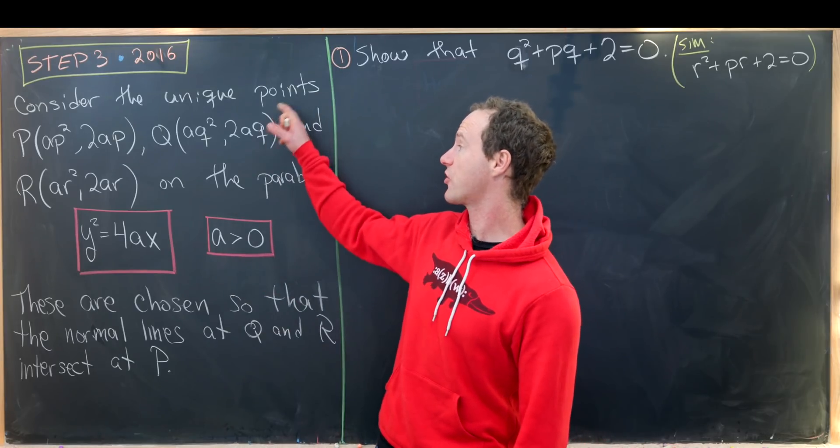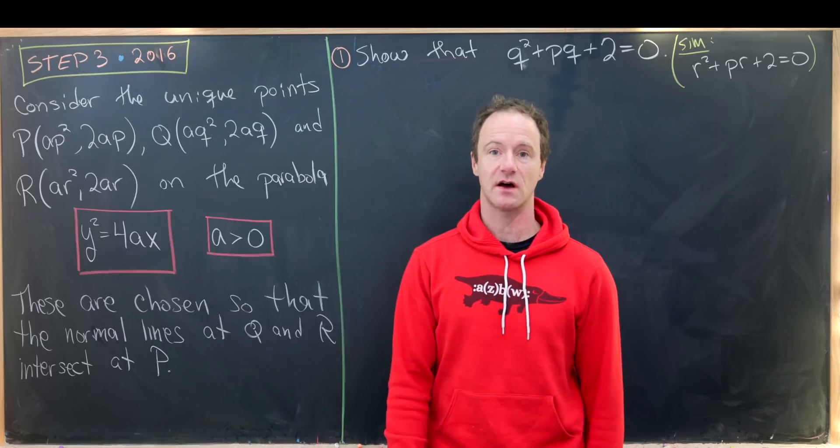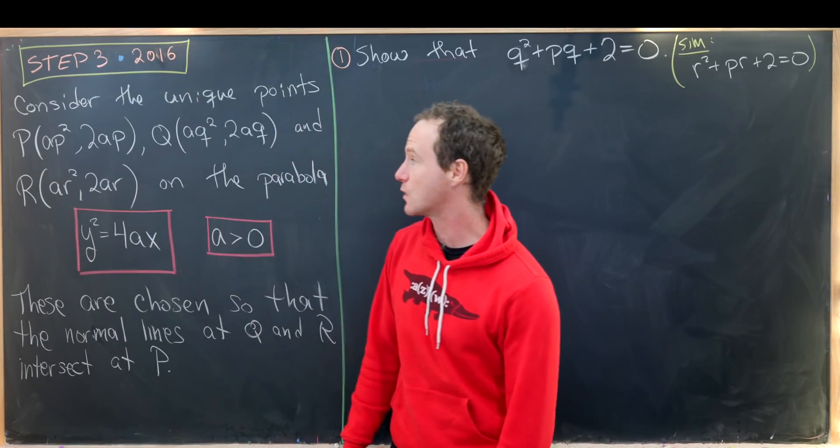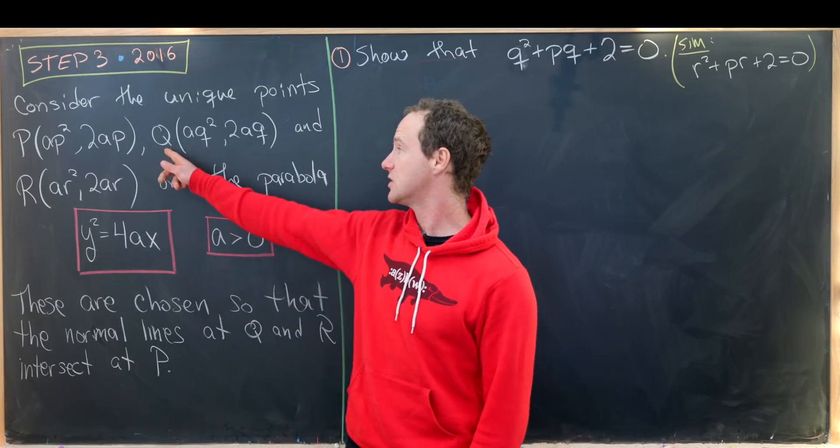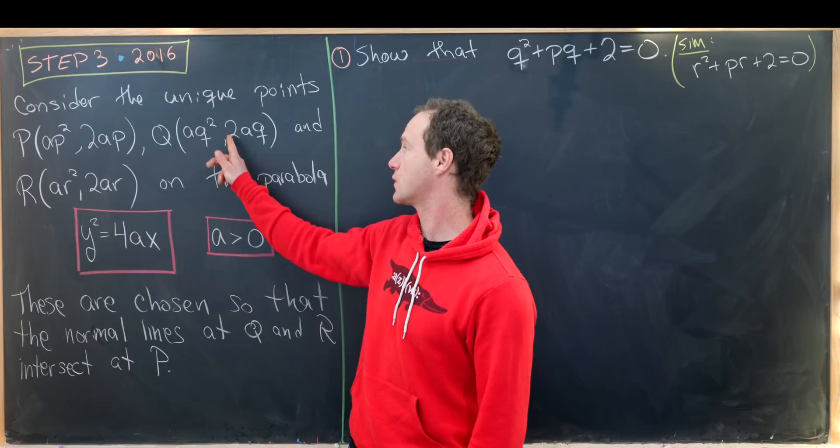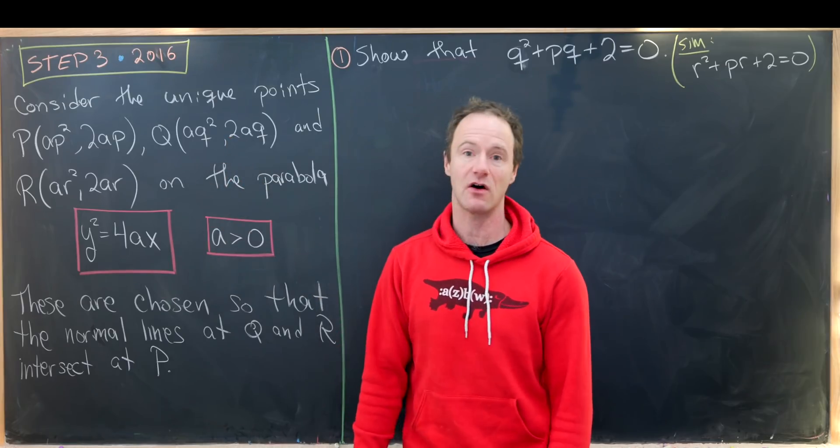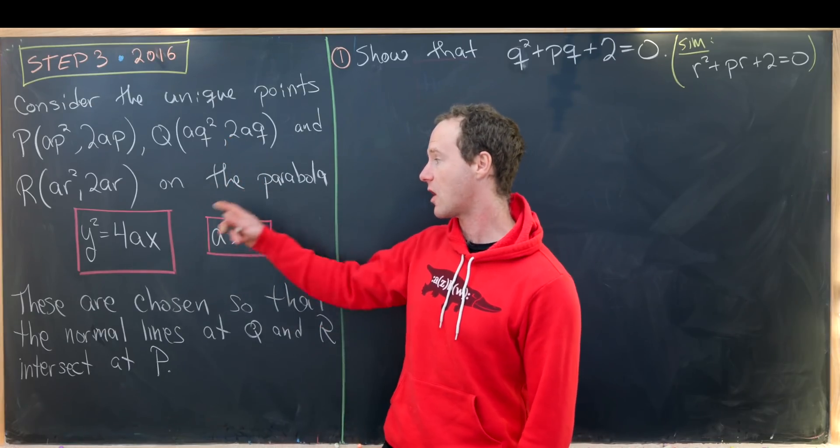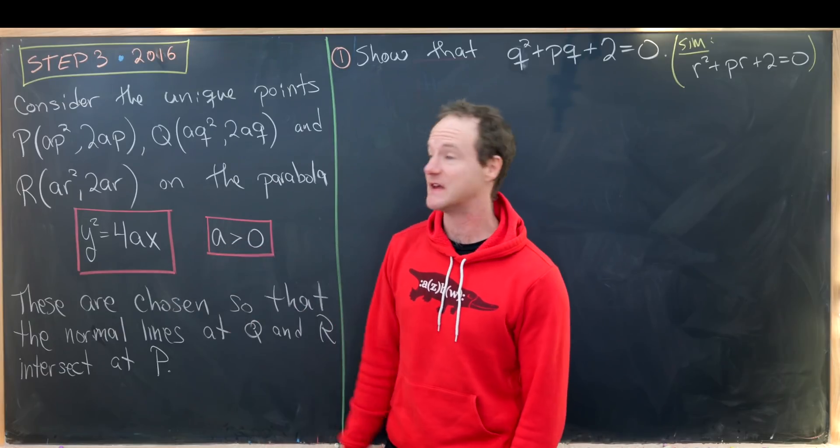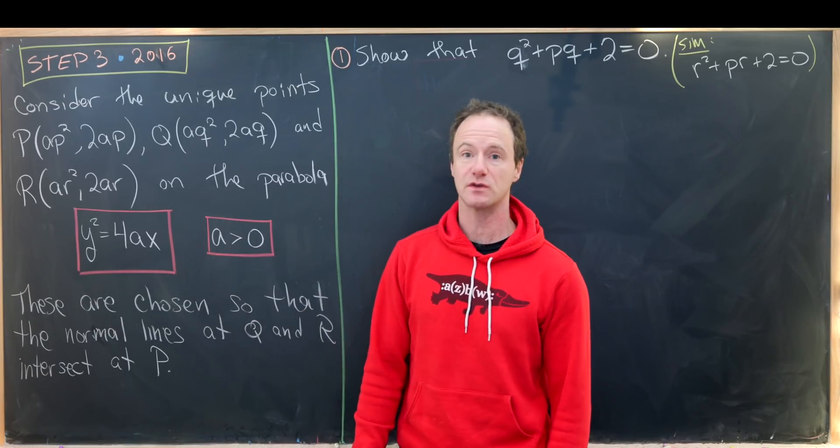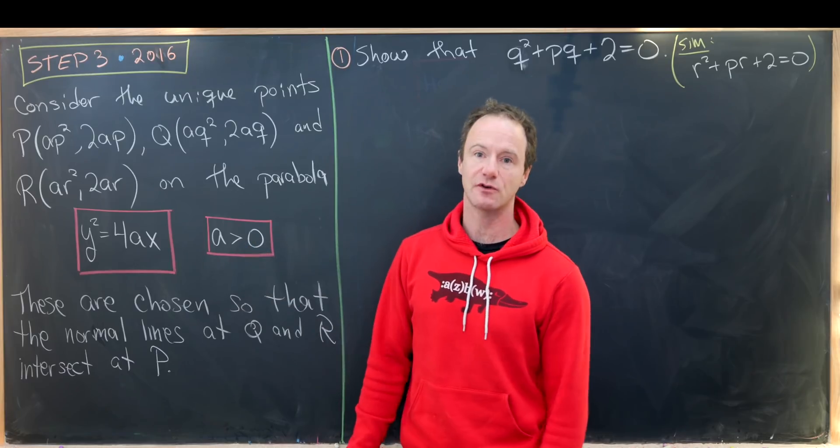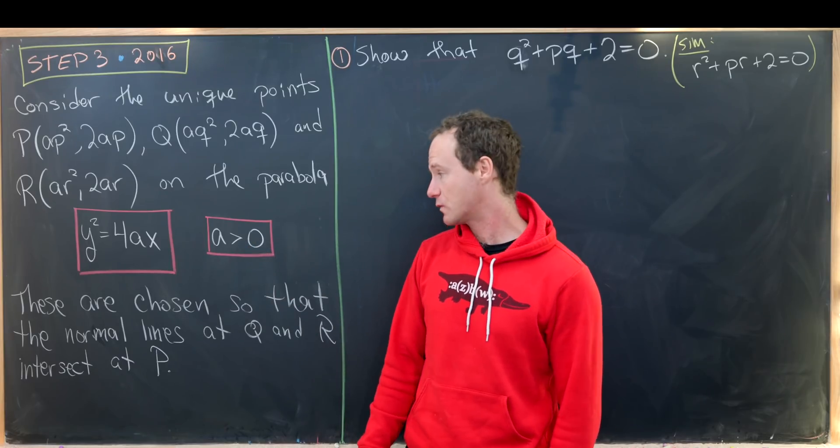So let's consider three unique points on a parabola. We've got P which is (AP², 2AP), Q which is (AQ², 2AQ), and finally R which is (AR², 2AR). And they're on this sideways facing parabola Y² = 4AX and A is bigger than zero meaning that this is rightward facing.